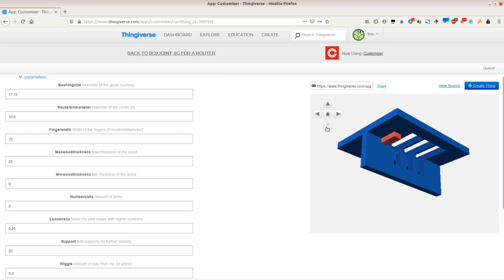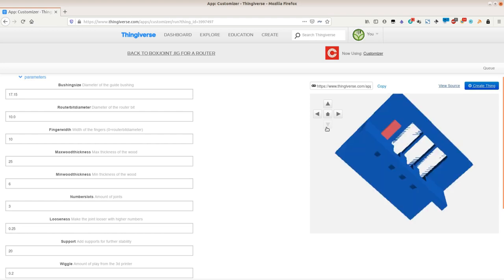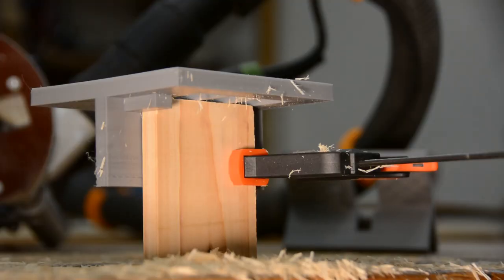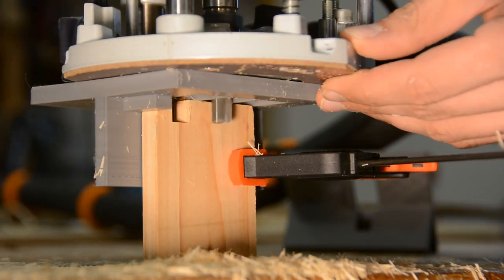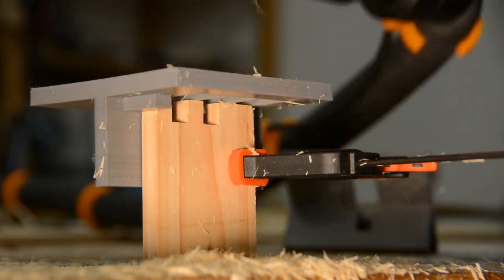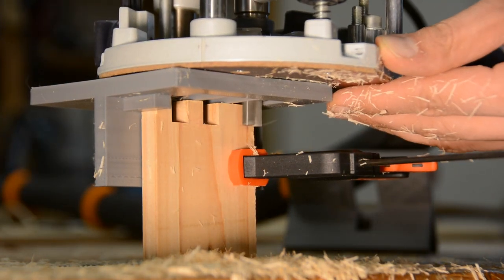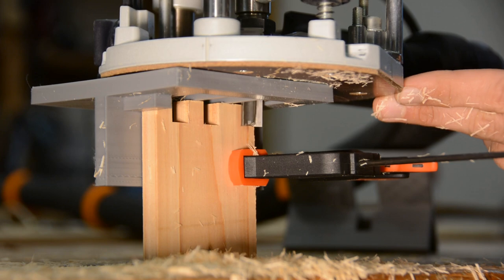The model now has three slots which is going to accelerate the routing of the box joints even more. This obviously is going to work only if the guide bushing diameter close to the router bit is chosen. When the difference gets too big these supports would break.